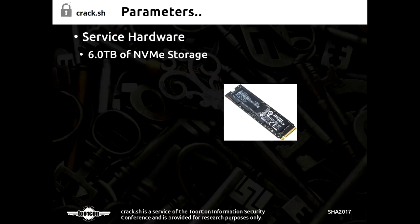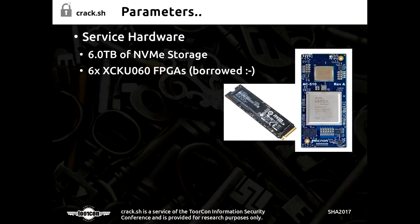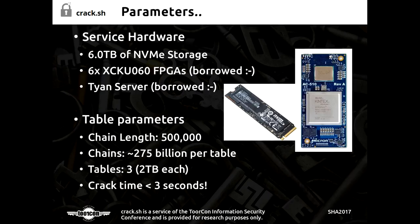I could afford six terabytes of NVMe drives — they're super fast — and borrow some high-end FPGAs. I came up with parameters: chain length around half a million links per chain, around 275 billion chains per table, three tables. This would get us a crack time of under three seconds. Sounds great, let's do that.